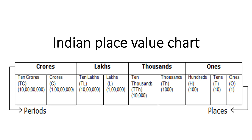There are four periods in up to nine digit numbers: ones, thousands, lakhs, and crores. There are three places in the ones period: ones, tens, and hundreds. There are two places in the thousands period: thousands and ten thousands. There are two places in the lakhs period: lakhs and ten lakhs. And there are two places in the crores period: crores and ten crores. Now all of you understand the Indian place value chart.